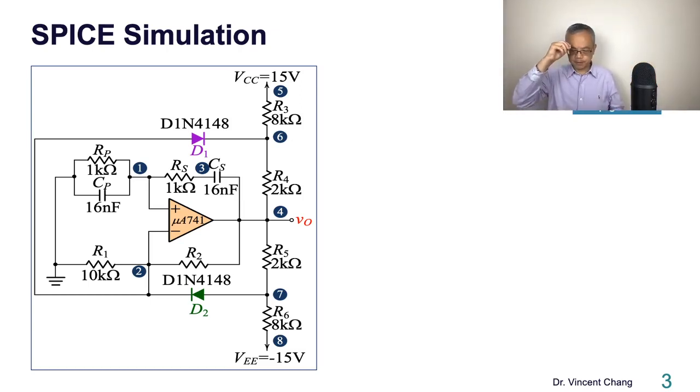Number one, I want to emphasize and strengthen your concept on the effect of loop gain. With different loop gain, you're going to see different results. Number two, I want to do a hand analysis and SPICE results reconciliation. I want to focus on the reconciliation for the output amplitude between the SPICE simulation and the hand analysis.